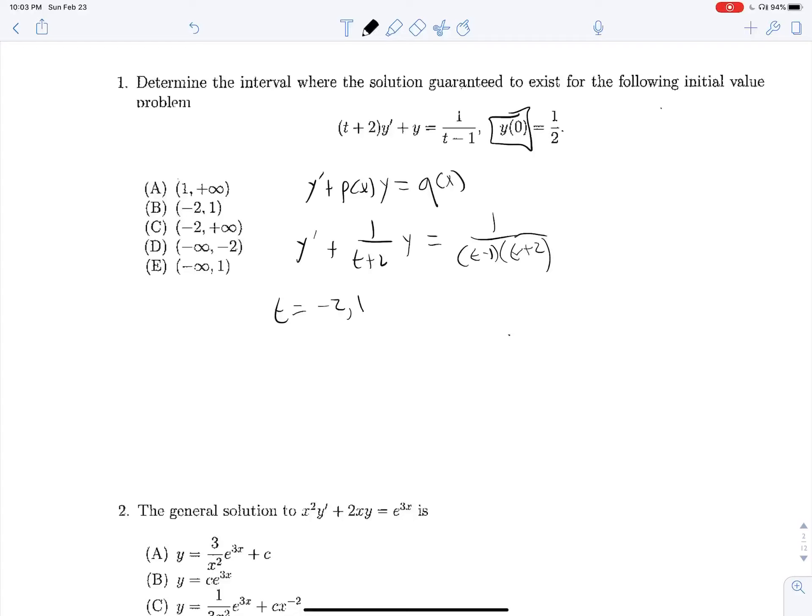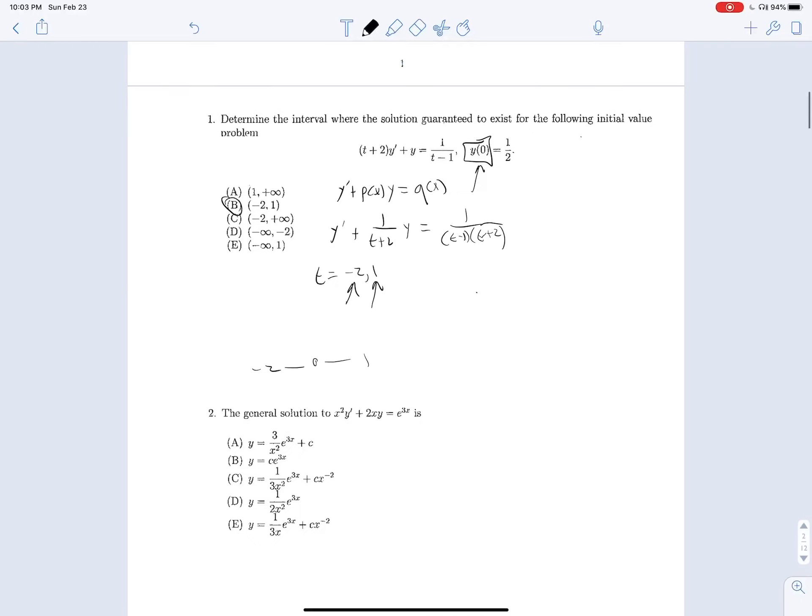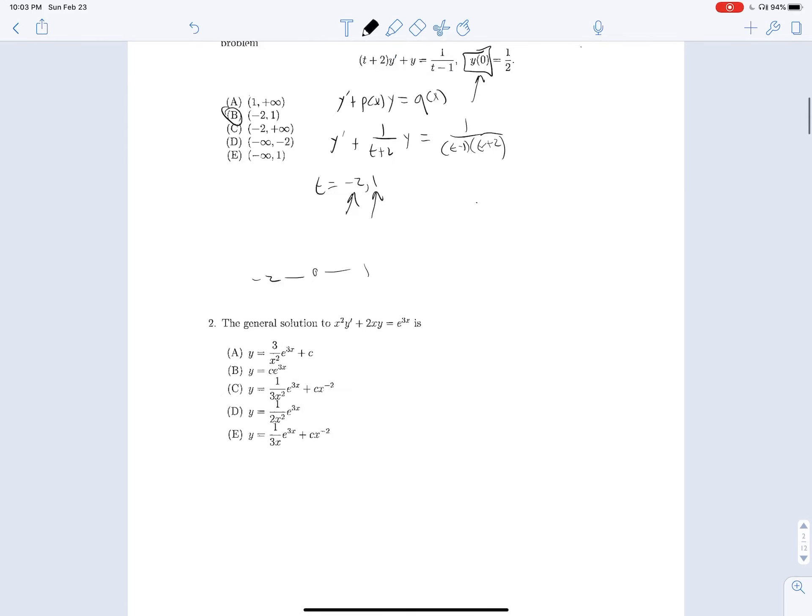And since we know that our solution curve here passes through the point y of 0, so the point t equals 0, the biggest rectangle we can draw around that point on t without hitting any of these bad values are these two bad values themselves. Because if we have negative 2, 1, I don't need to tell you that 0 falls in between both of those. So there is our answer, 1 is b.